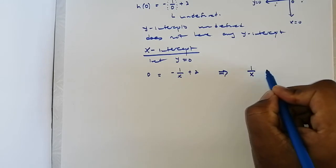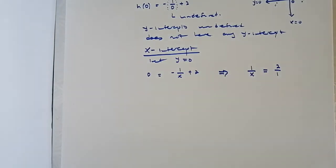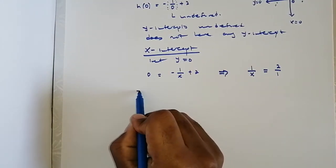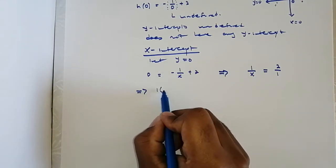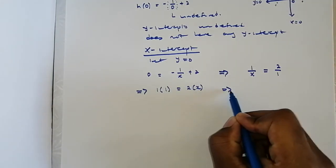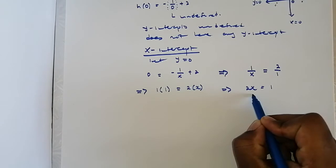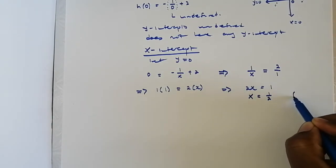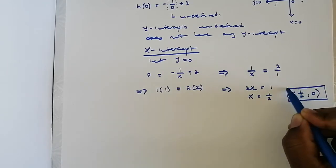We're going to simplify and solve for x by cross-multiplying: one multiplied by one equals two multiplied by x, so two x equals one, and hence x equals one over two. The x-intercept is (1/2, 0) — this is where the graph will actually cross the x-axis.